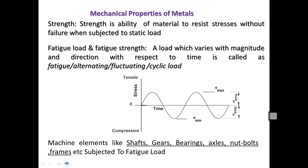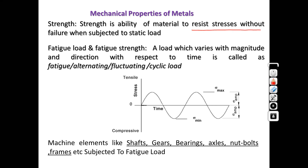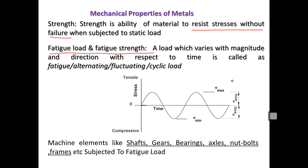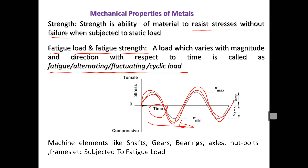Now we'll discuss the different mechanical properties of materials. The first basic property is strength — the ability to resist stresses without failure. Remember these two key words: resist the stress, without failure. When the load is static, it is called static strength. When the load is fatigue — that is, varying with respect to magnitude or direction, also called alternating, fluctuating, or cyclic load — it is called fatigue strength. Components subjected to fatigue loads include shafts, gears, bearings, axles, and frames.